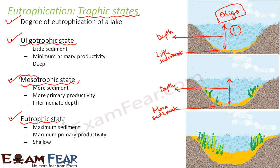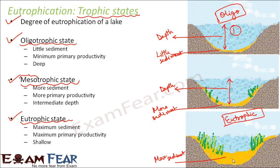Finally, the third state is the eutrophic state. Here the lake is becoming all the more older. In this state it has maximum sediment, and as a result the depth has reduced a lot — so the lake is shallow. It also has maximum primary productivity because there are so many aquatic plants and the number of producers has increased. So as the lake passes through the oligotrophic, mesotrophic, and eutrophic states, gradually the primary productivity keeps on increasing, the depth keeps on decreasing, and the sediment also keeps on increasing.